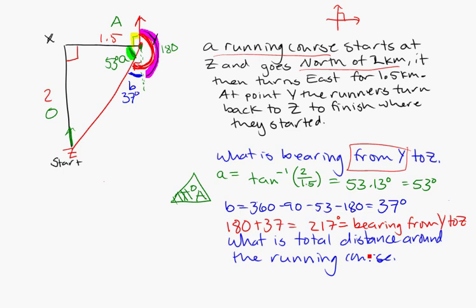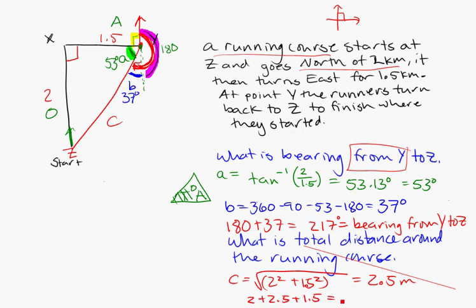The next thing they've asked me to do is find the total distance around the running course. Well, I know two of them, 2 and 1.5. And I can use Pythagoras again to figure out how far this side is here, because I know two of the sides. So, I could say C is equal to the square root of 2 squared plus 1.5 squared. And I get 2.5 meters. But that's not the final answer. I need to know the total distance. That's 2 plus 2.5 plus 1.5. And that gets us to a total of 6 meters around the course. Sorry, it should be kilometers. We're talking about kilometers up here. 6 kilometers. A 6 meter running course wouldn't be very exciting. 6 kilometer running course.